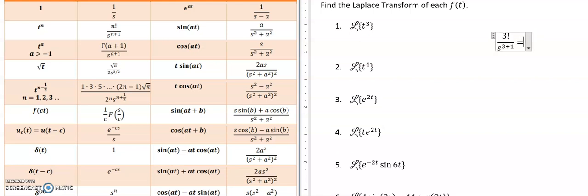And if we simplify, 3 factorial is 1 times 2 times 3, which is 6, and then s to the 3 plus 1 is s to the 4th.